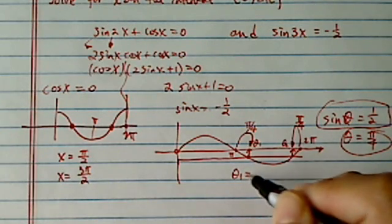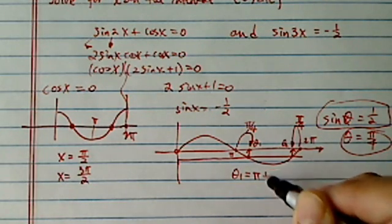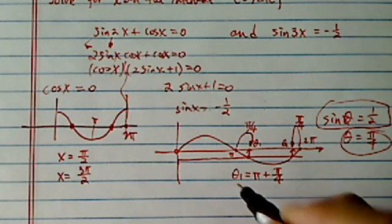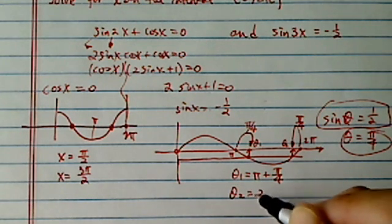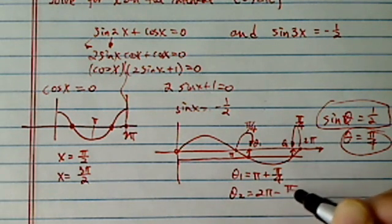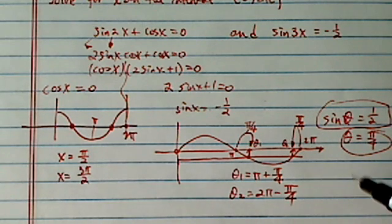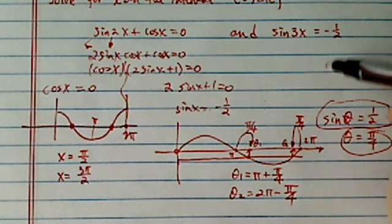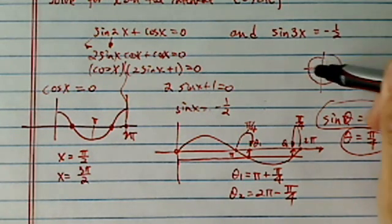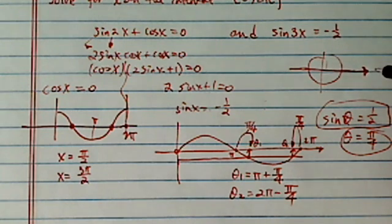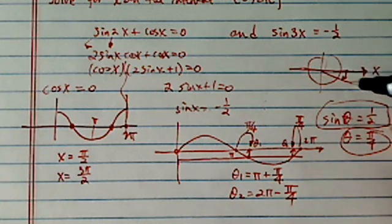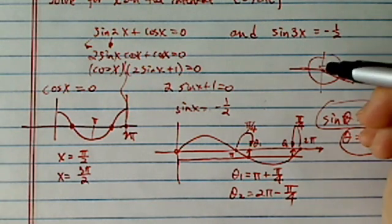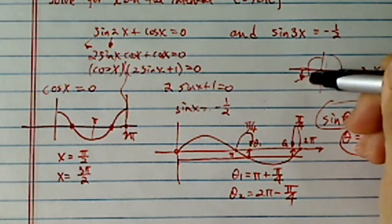So θ₁ is equal to π plus my reference angle. θ₂ is 2π minus my reference angle. It does make sense because on a unit circle, your reference angle is always measured from x-axis. That's why 2π is over here, I'm measuring this way. And then the π added to this one, it's this one.